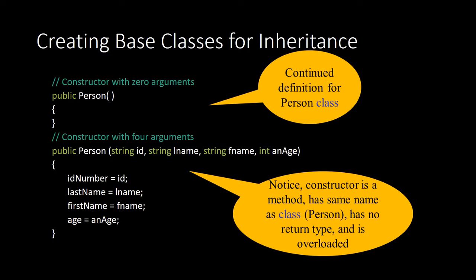When creating the base class for inheritance, we have public Person — a zero-argument constructor, which is a continued definition for the Person class. A constructor with four different arguments is right below: public Person, string id, string lname, string fname, and int age. Notice that the constructor as a method has the same name as the class, which is Person. There's no return type, and it is overloaded, meaning it can be used for more than one thing.